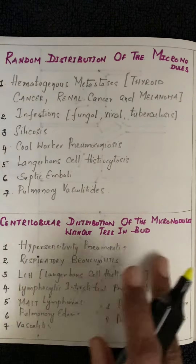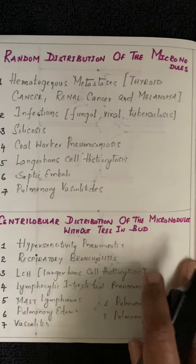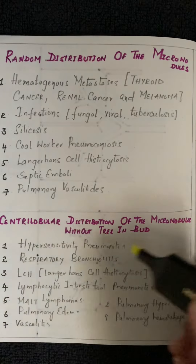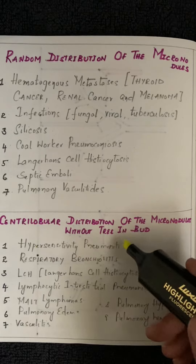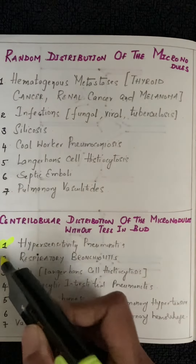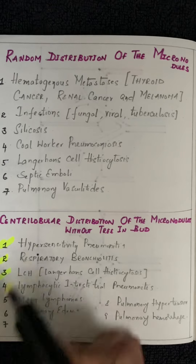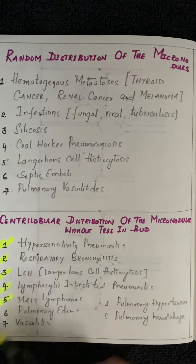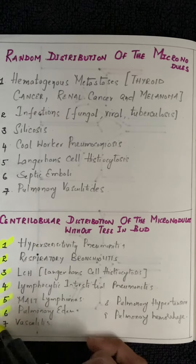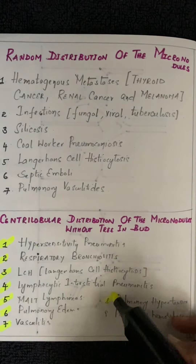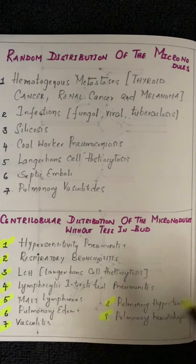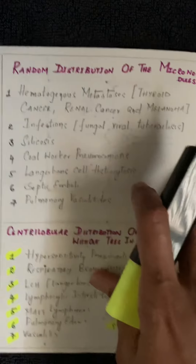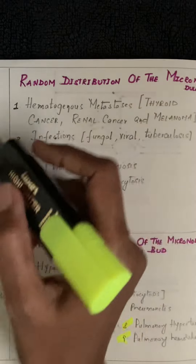For centrilobular distribution without tree-in-bud appearance, the differentials include hypersensitivity pneumonitis, respiratory bronchiolitis, Langerhans cell histiocytosis, lymphocytic interstitial pneumonitis, MALT lymphoma, pulmonary edema, vasculitis, pulmonary hypertension, and pulmonary amyloidosis.